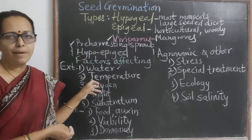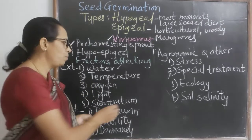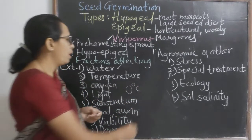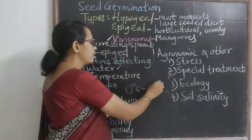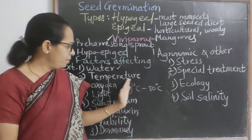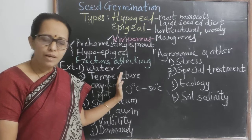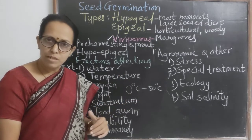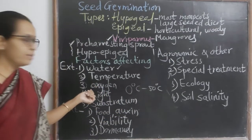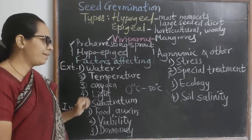The next external factor is temperature. There is a certain range — below 0°C and above 50°C — at which germination is arrested, likely because enzymatic activities are inhibited at such temperatures. That temperature range must be maintained for the seed to germinate efficiently.